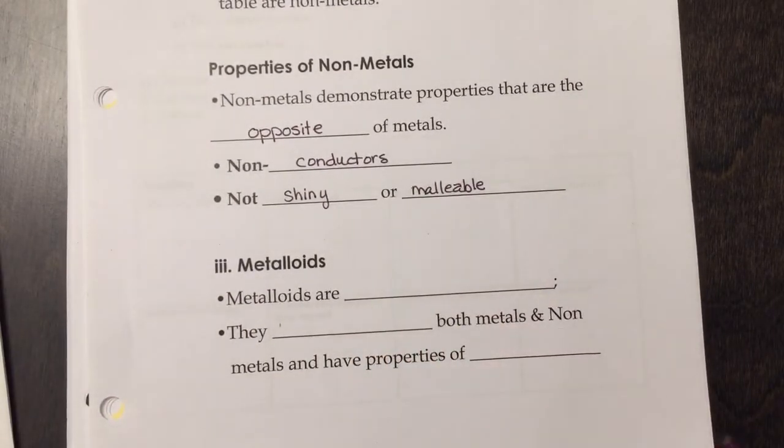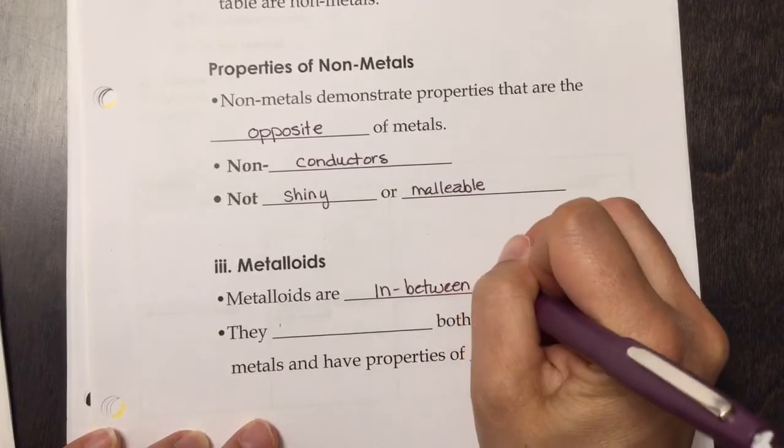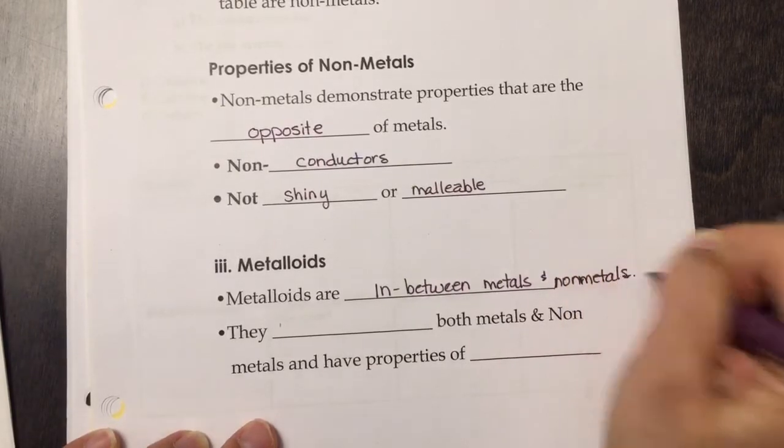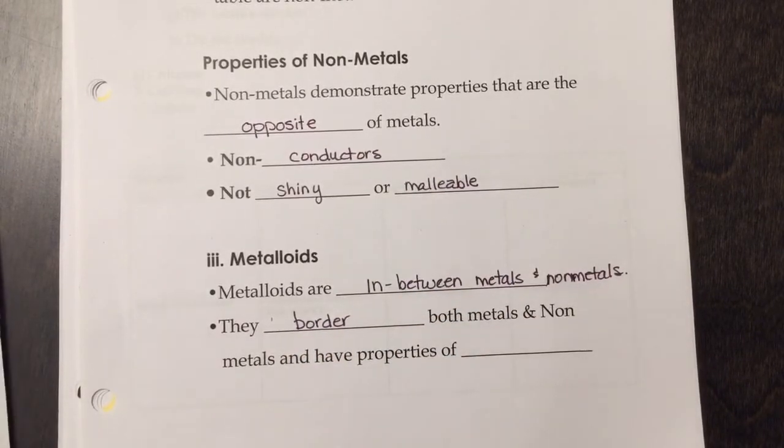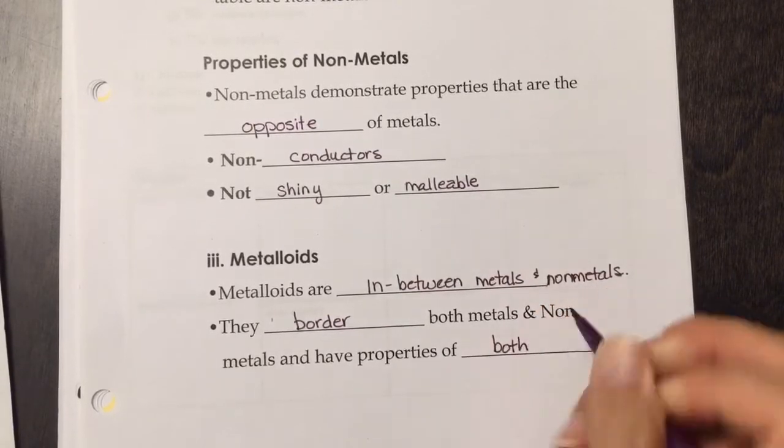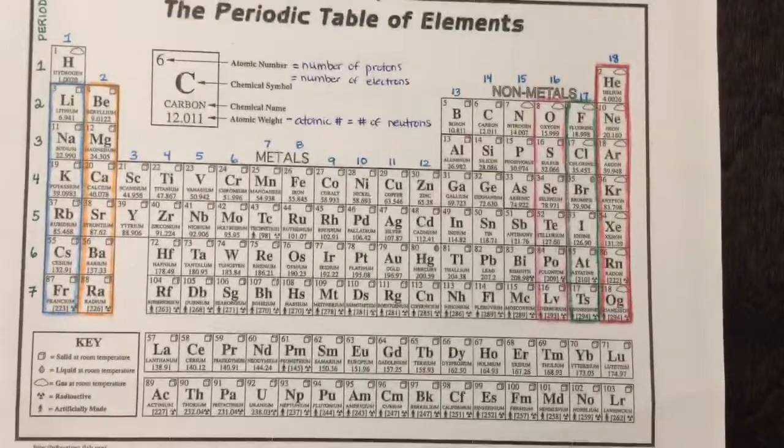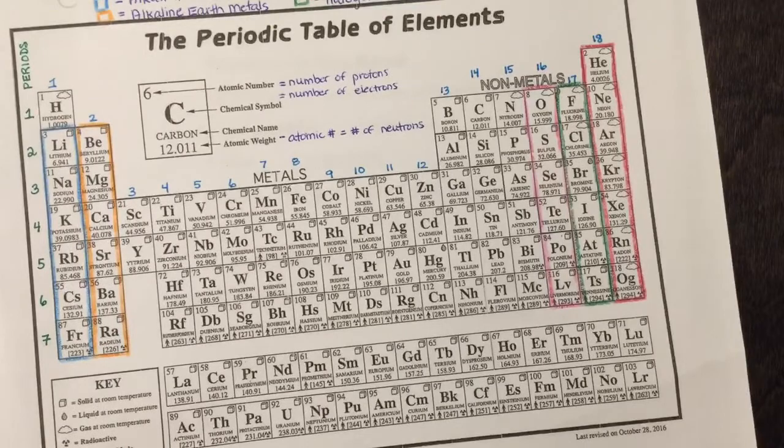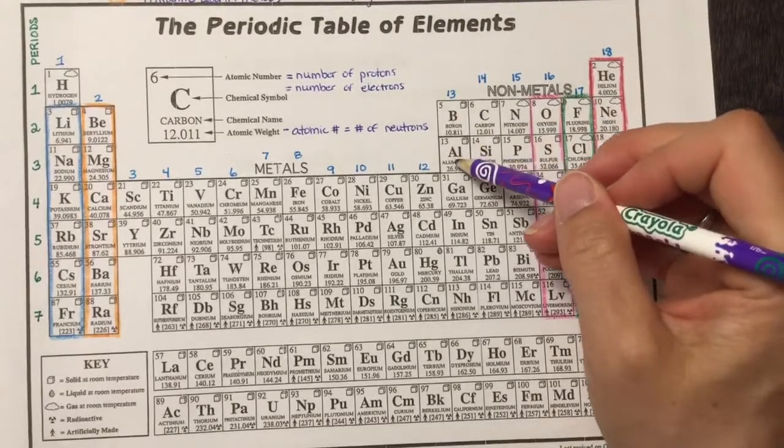The last group is the metalloids. Metalloids are in between metals and non-metals. They border both metals and non-metals and have properties of both. There's nothing on the next side, so now let's shade this in. We're going to shade in the metalloids first. Our metalloids are the first seven that follow the staircase and go up to polonium, but they do not include aluminum.